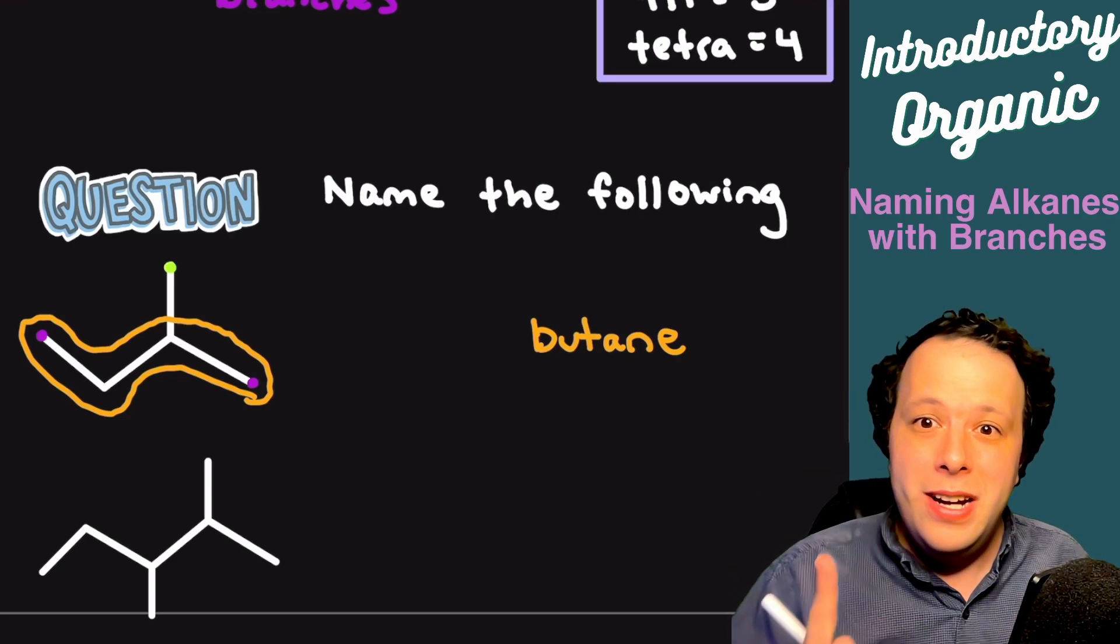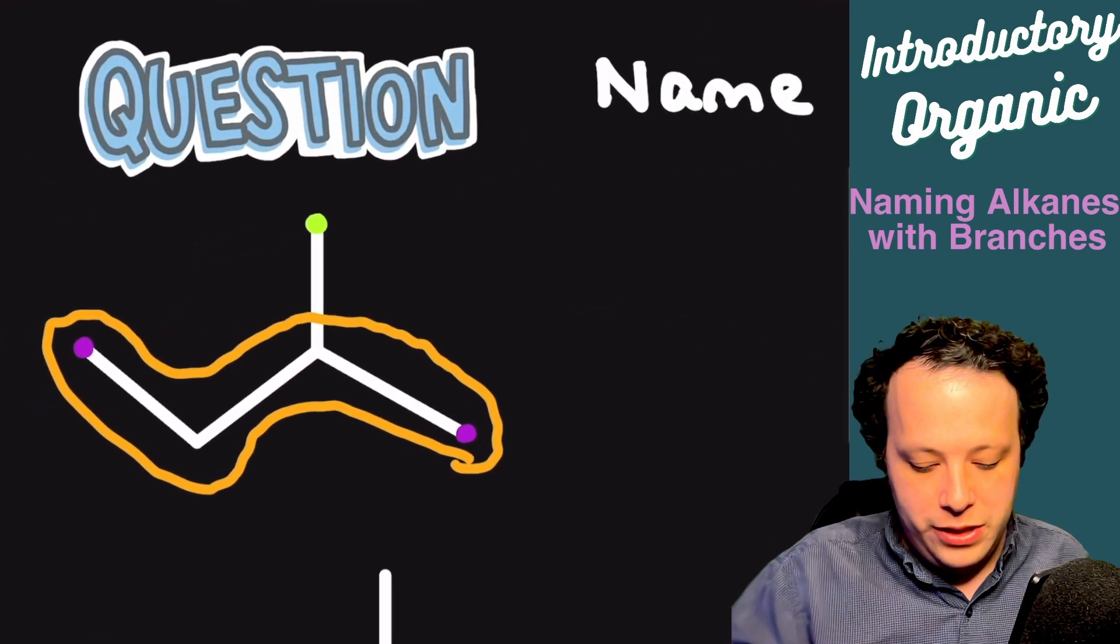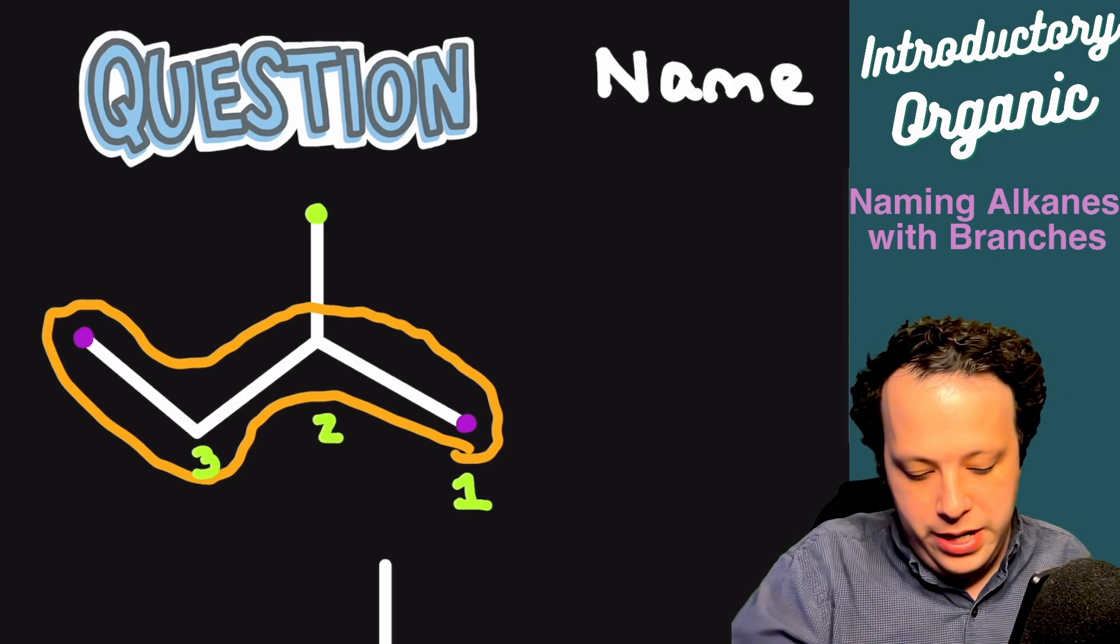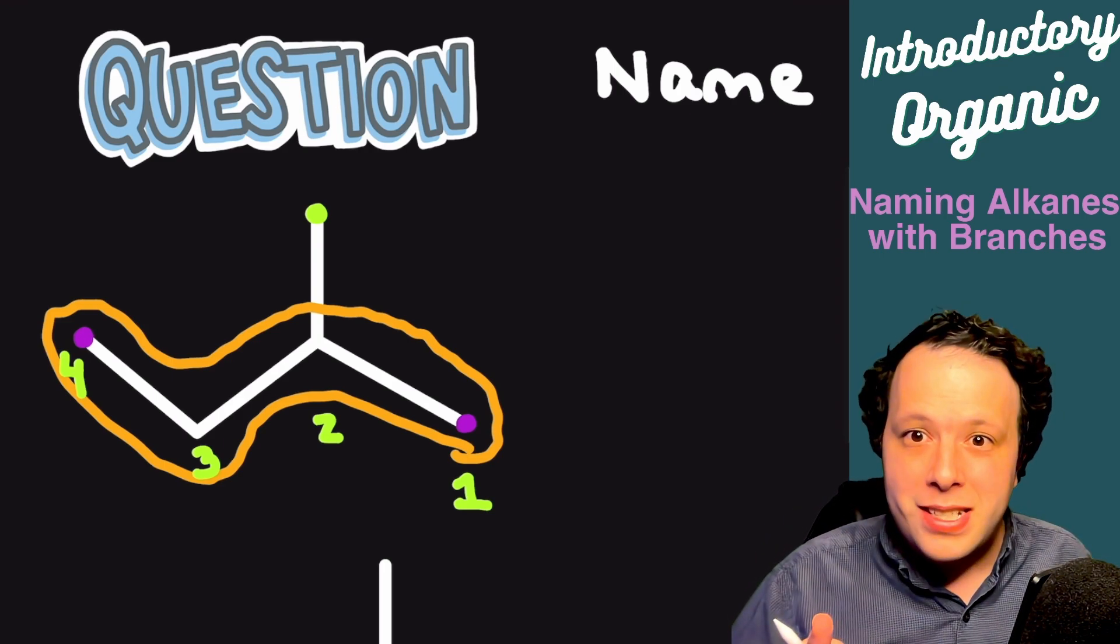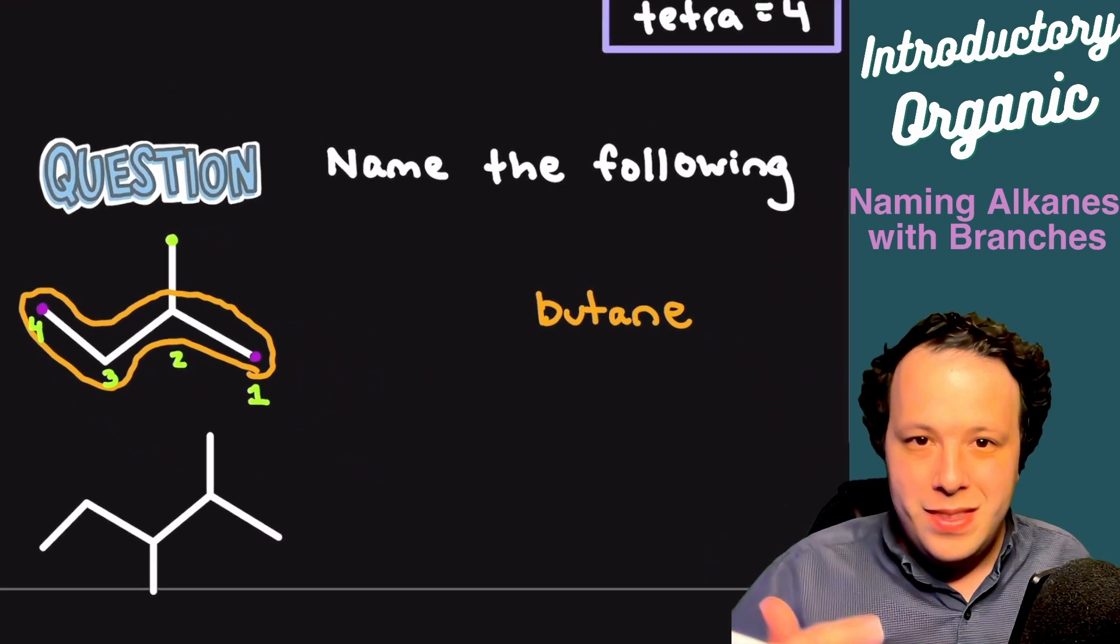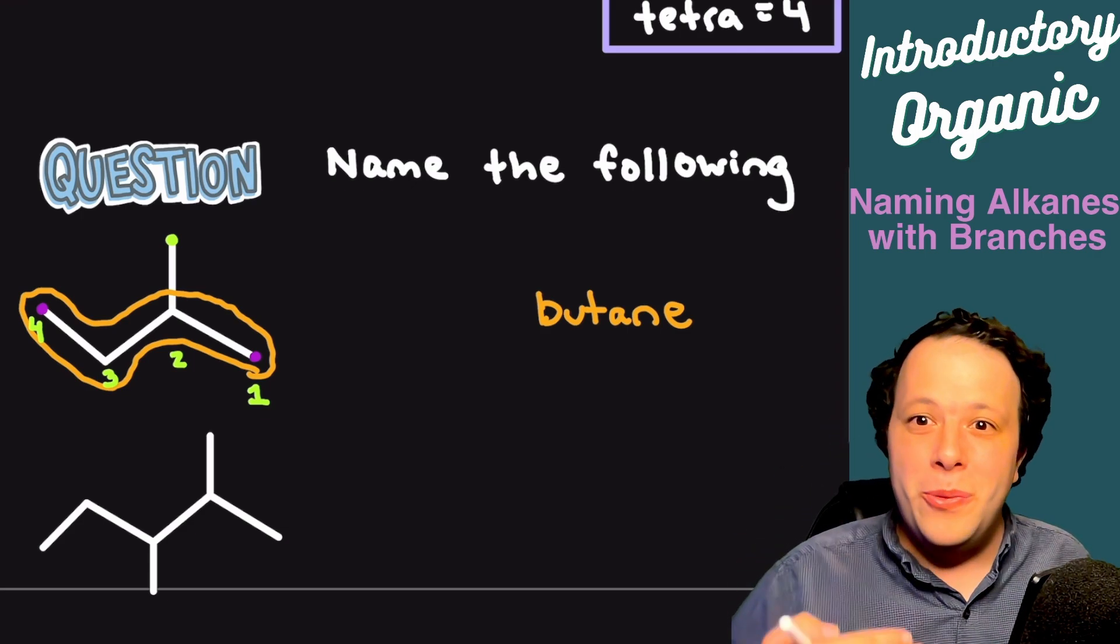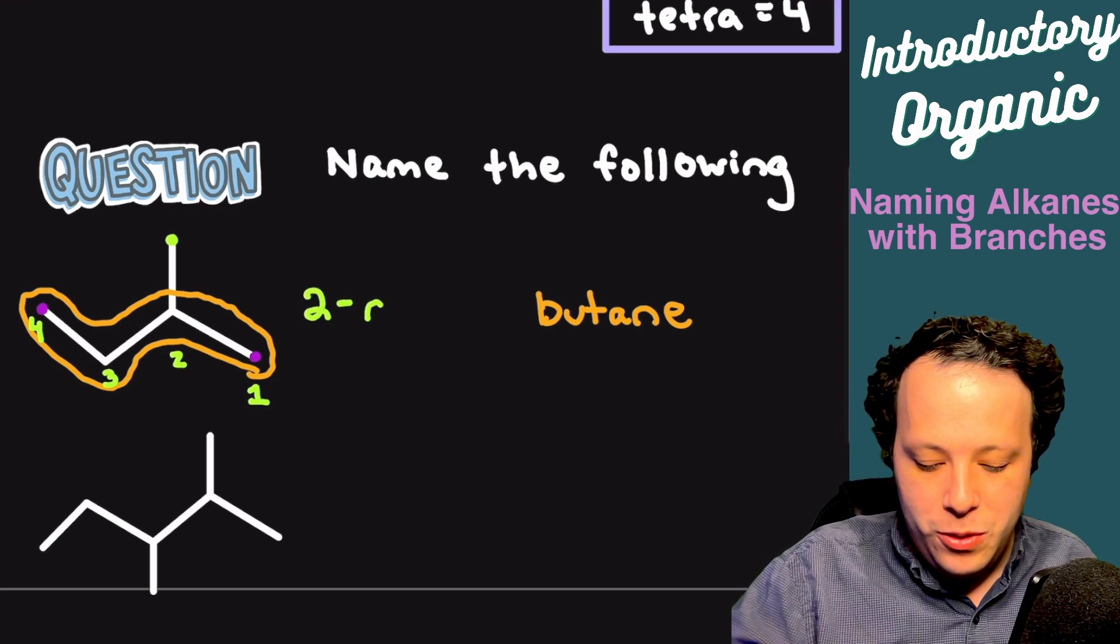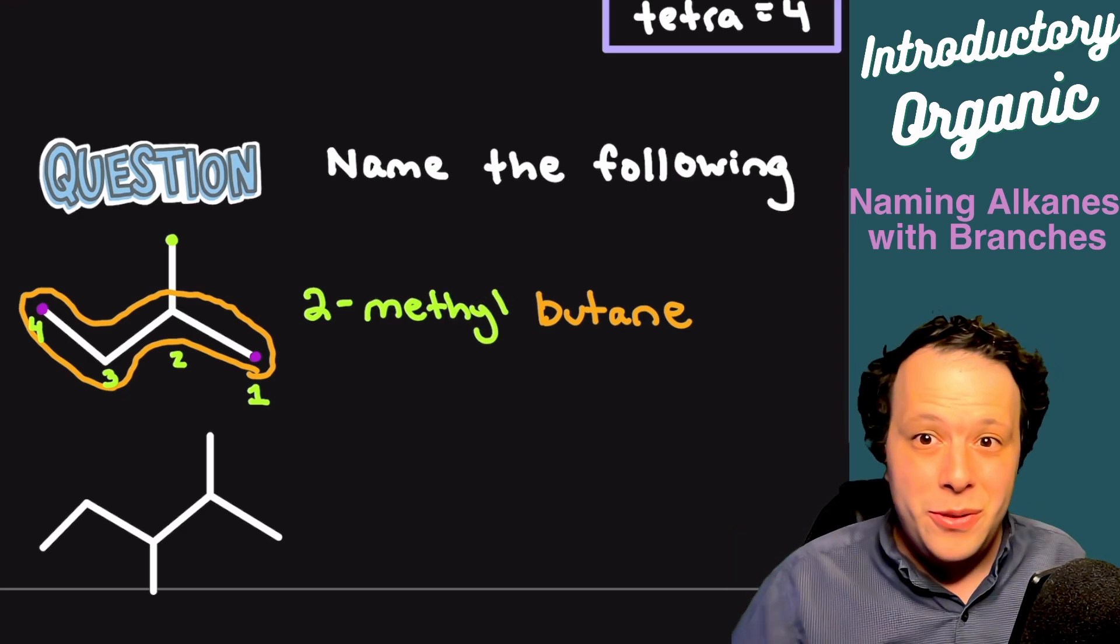Now when we are numbering that parent chain, we have to start at the end that's closest to it. We always want to give the lowest number possible, so that's why we start at the end that is closest to our branch. So now what is the name of that branch? Well, if you remember from before, one carbon was methyl. So what we would do is we will number its location and then we will name it. So 2-methylbutane will be the first name, and that's how you would go about that.